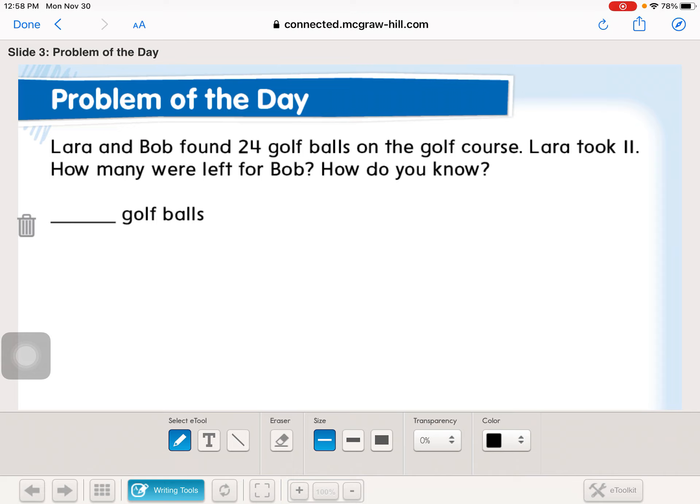So if we think about what's happening here, we know that they found 24 golf balls and that Lara took 11 of them. So we want to find out how many are left for Bob, which means we're definitely going to subtract so that we can find the difference. So we have 24 minus 11. If we start in the ones place, we have four ones. Can we take away one? We can. Four minus one is three, and then two minus one is one. So Bob has 13 golf balls.